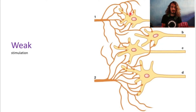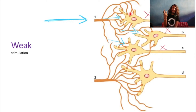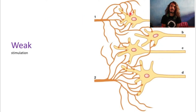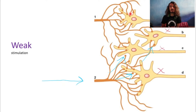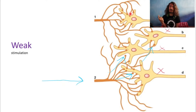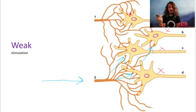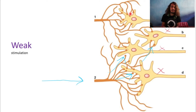Let's stimulate axon one with a weak subliminal stimulation. There is no action potential recorded in any of the neurons — the final output is zero. Now let's stimulate axon two separately with a subliminal stimulus. Again, no action potential at all — final output is again zero. So stimulating each axon separately with a subliminal stimulus results in zero action potentials in both cases.